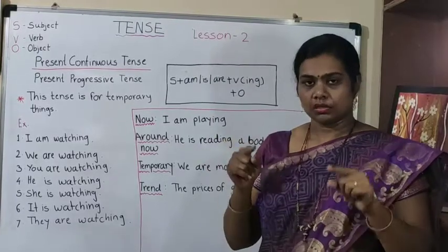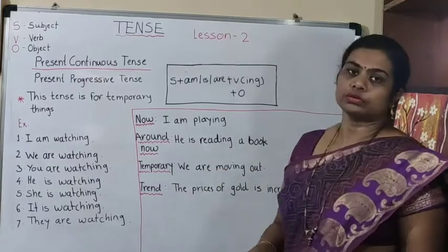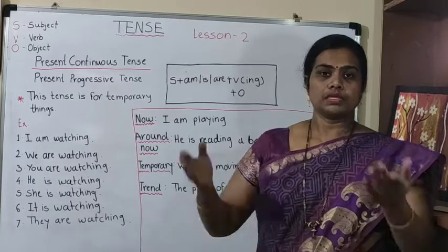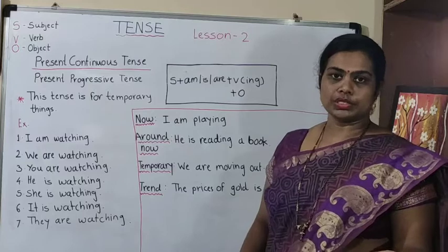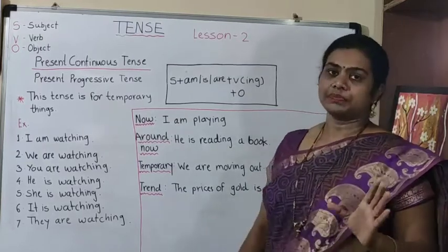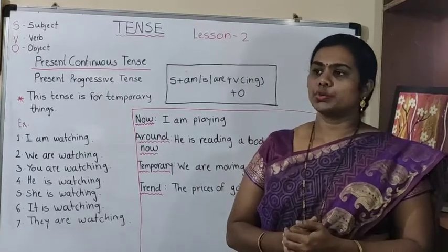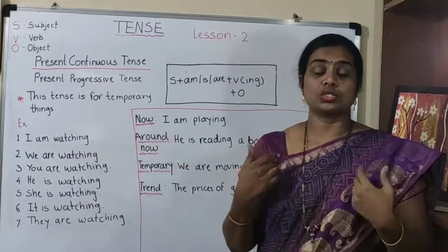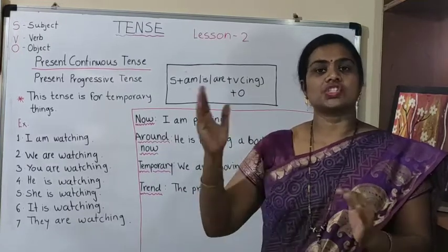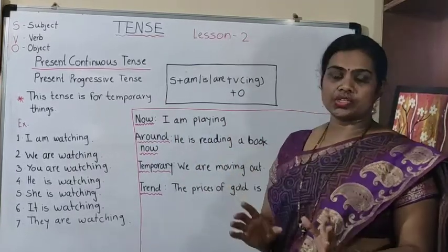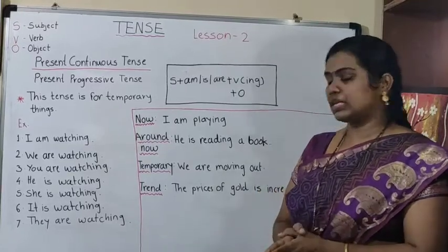Third condition: temporary. For example, if somebody calls you and asks where you are, you say 'we are moving out' — meaning you are not staying there permanently, but right now you are temporarily moving out. In temporary situations you use present progressive tense. Fourth condition: trends. Trends always change — gold prices are hiking, trends are changing, your clothes trends are changing. Whenever you talk about trends, you say 'the trends are changing.'